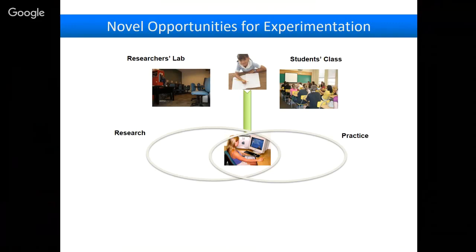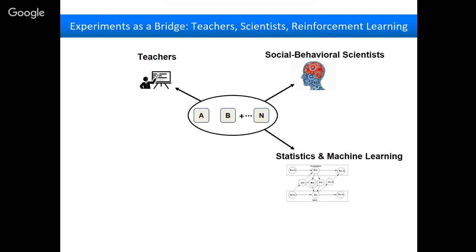I see experiments as actually being a bridge between teachers who might be asking questions about which motivation messages work, social behavioral scientists who ask questions like what are different cognitive processes that people engage in or what are the attitudes that they form, and then actually machine learning researchers. In particular, I think a lot about reinforcement learning, which is machine learning for deciding how do you take actions. So can we run our randomized experiments so that we have algorithms that will in real time figure out which conditions are good and can we deploy them to future students and which conditions work for different people.